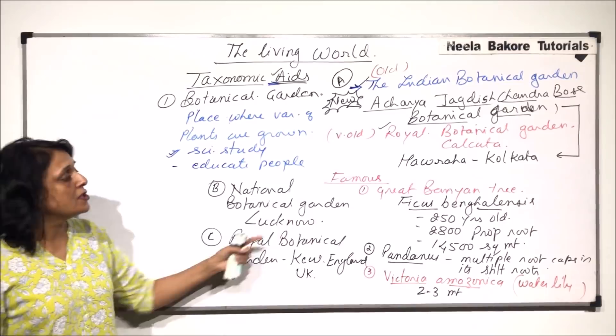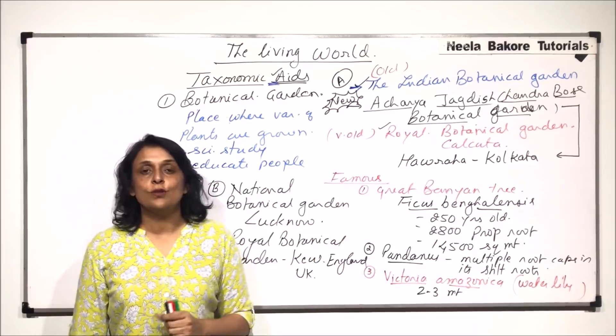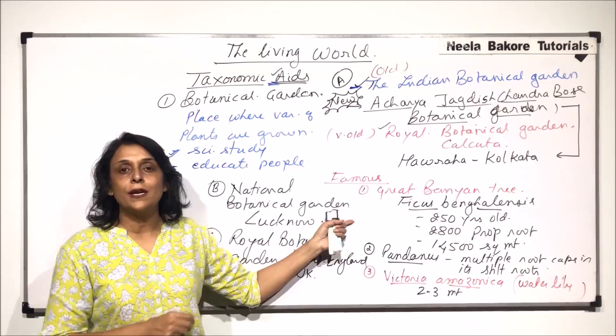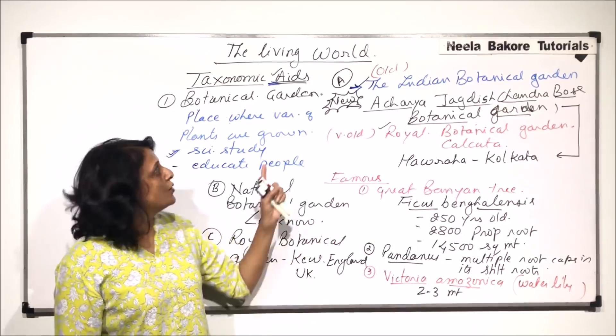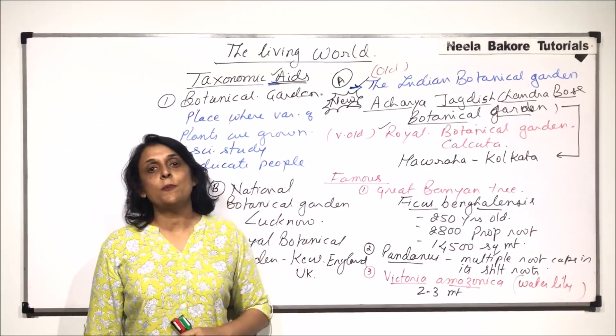When we visit these gardens, all the plants have their scientific names, their age, natural habitat, and everything mentioned. This helps students to study, and people not associated with biological study also get fascinated when they learn such information. This is one taxonomic aid that we have discussed. In the next part, we will take a few more taxonomic aids.